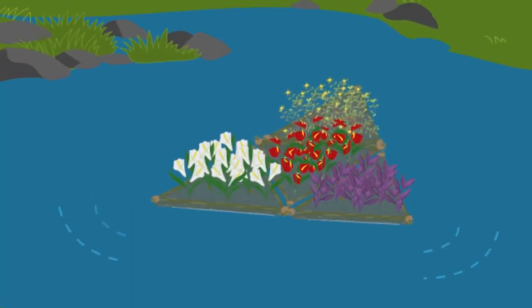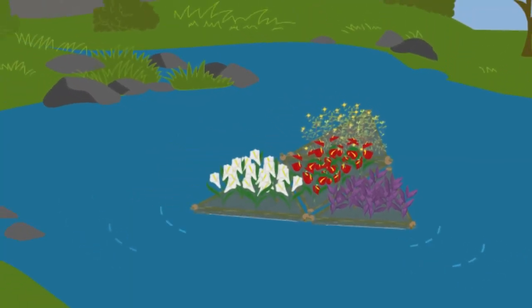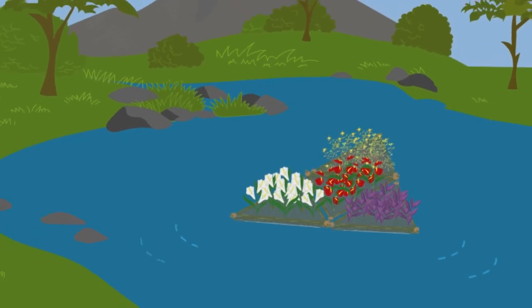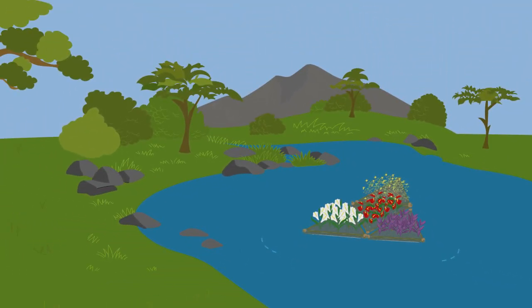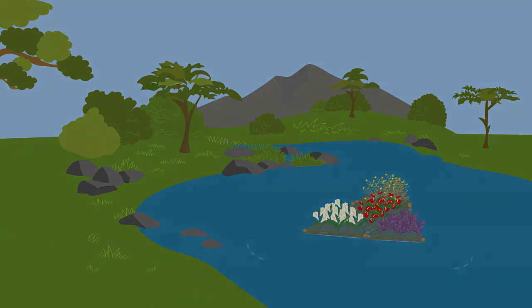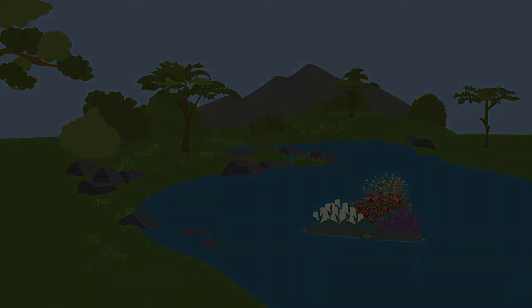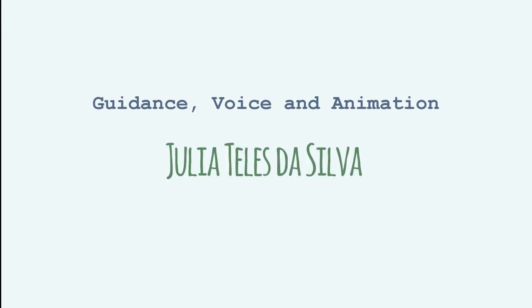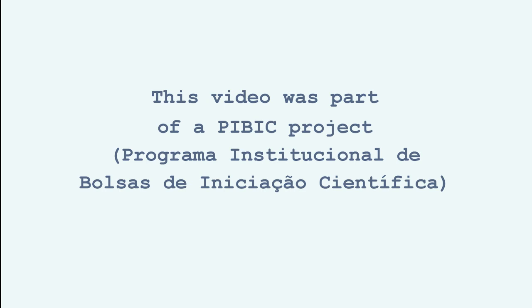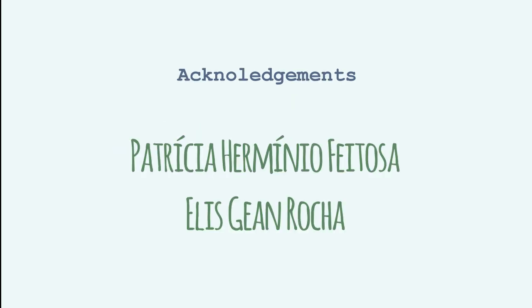The floating garden combines traditional and modern knowledge and creates a solution with sustainable materials for a current problem, water pollution.